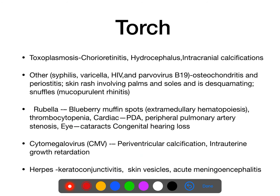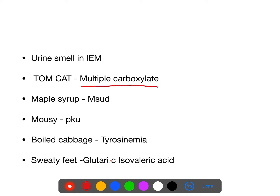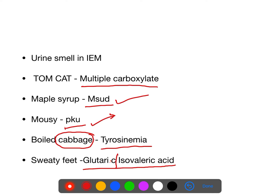Various urine smells in IEMs to remember: Tomcat urine — multiple carboxylase deficiency. Maple syrup — maple syrup urine disease. Mousy or musty urine — phenylketonuria. Wild or boiled cabbage — tyrosinemia. Sweaty feet — glutaric acidemia or isovaleric acidemia.